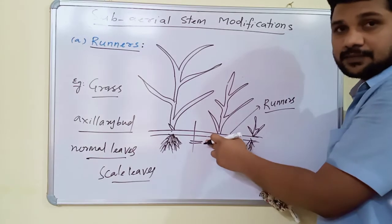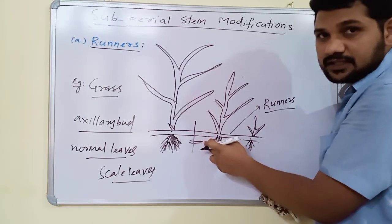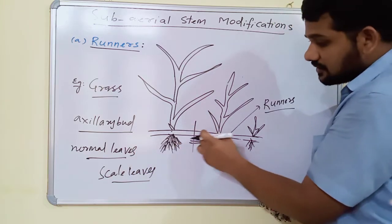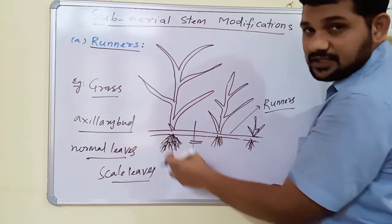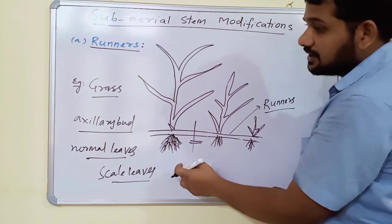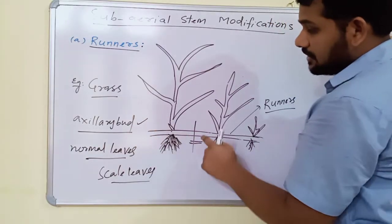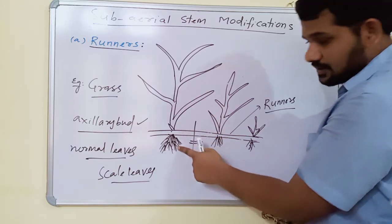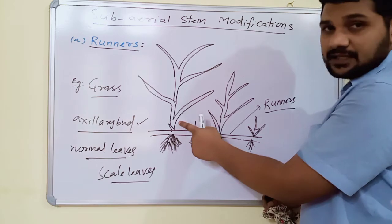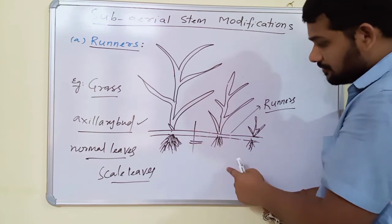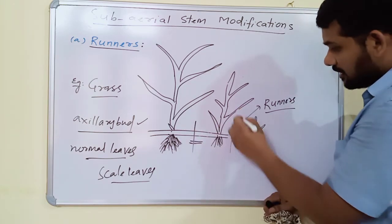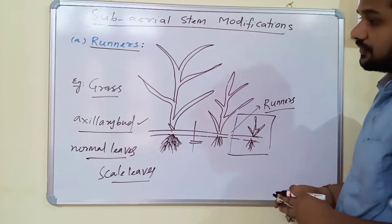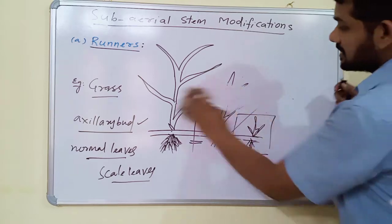To summarize runners: they are horizontal, green, narrow branches, usually devoid of normal leaves at their nodes. Runners are differentiated into nodes and inter-nodes, and these weak stems also contain axillary buds. Runners can produce adventitious roots and possess scale leaves. The broken part of a runner can become an individual plant — that is vegetative propagation. This is the first sub-aerial stem modification.